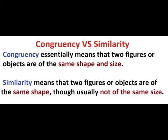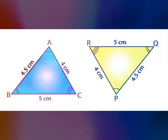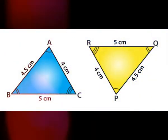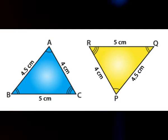Geometrical figures of the same shape and size are congruent. We know that two triangles are congruent if they are of the same size — that is, their three corresponding sides and their corresponding angles are equal.